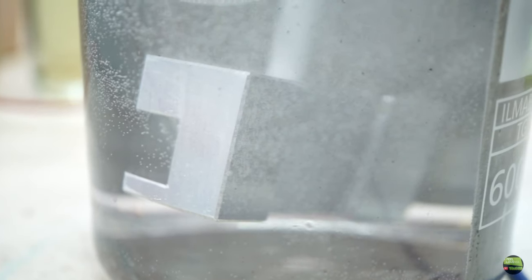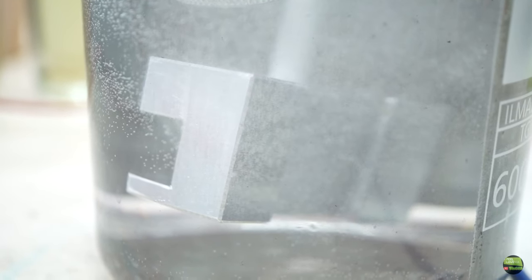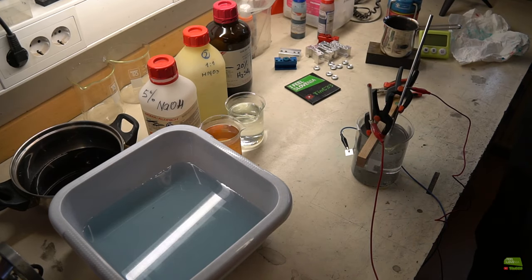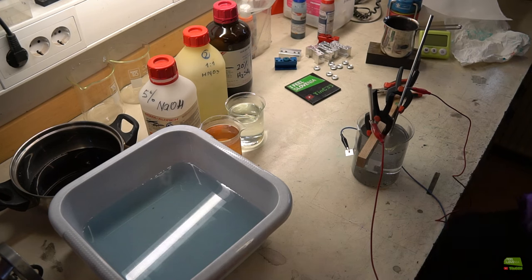If possible make that step outside, because while anodizing some acid evaporates into air and when it drops on some steel surface it will rust. So if you do that in a workshop like I do, a protection mask is a must. And cover the container to stop evaporating. Open windows also help.